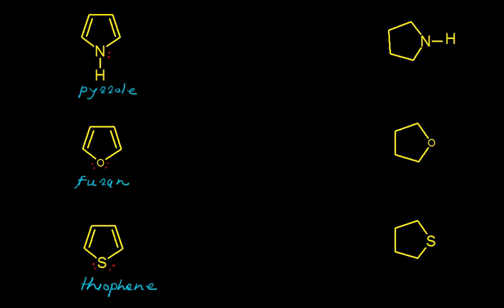In the previous video we saw that pyridine is an aromatic heterocyclic compound. In this video we will focus on three examples: pyrrole, furan, and thiophene.